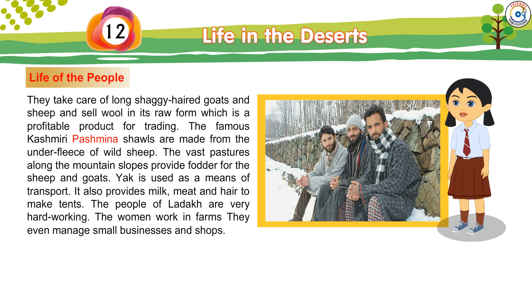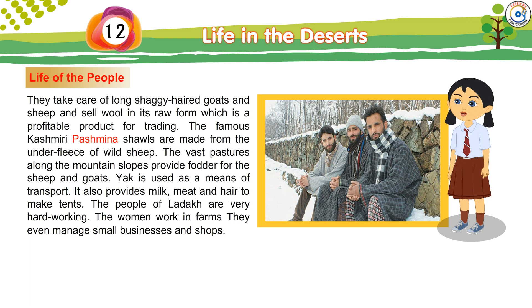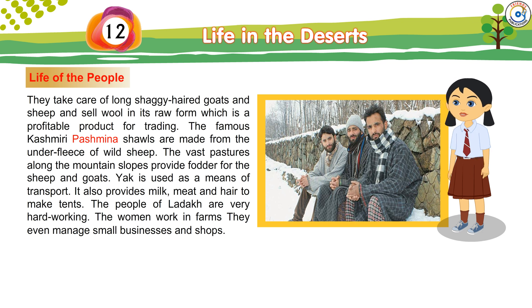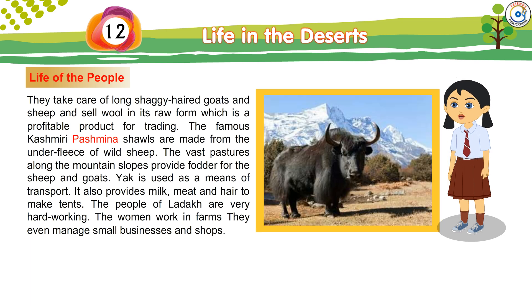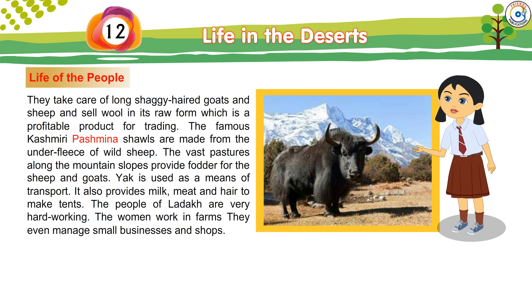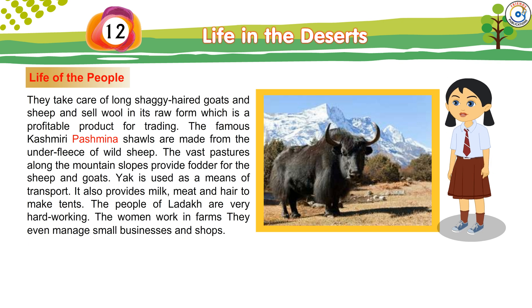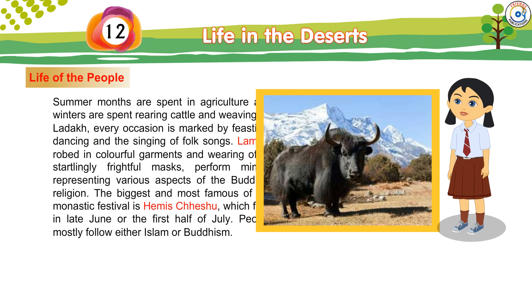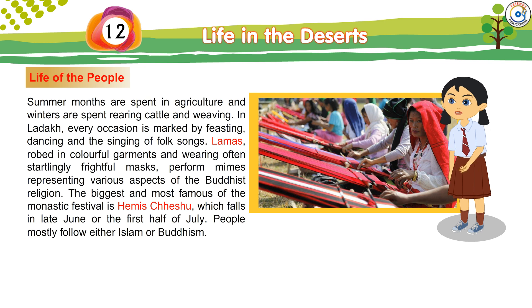The famous Kashmiri pashmina shawls are made from the under-fleece of wild sheep. The vast pastures along the mountain slopes provide fodder for the sheep and goats. Yak is used as a means of transport. It also provides milk, meat, and hair to make tents. The people of Ladakh are very hardworking. The women work in farms and even manage small businesses and shops. Summer months are spent in agriculture and winters are spent rearing cattle and weaving.